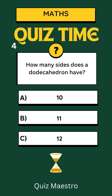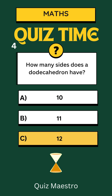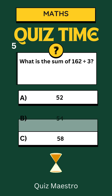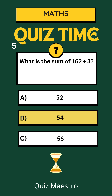The answer is c) 12. Question 5: What is 162 divided by 3 — is it a) 52, b) 54, or c) 58? The answer is b) 54.